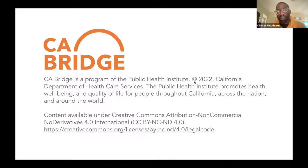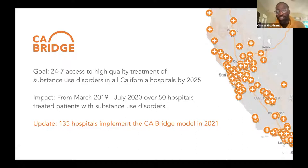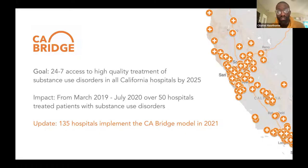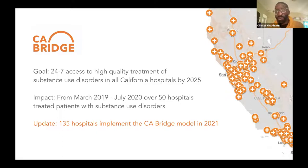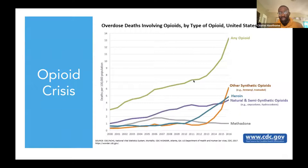Just a little background on California Bridge: we're a program of the Public Health Institute, and we work to make sure there's access to high-quality treatment in hospitals across the state by 2025, essentially trying to ensure access to treatment 24/7. We currently have a funding opportunity called our Bridge Navigator Program, which is funding hospitals to get substance use navigators. We're working on placing navigators at a few children's hospitals across the state. If you're interested or have a connection to a hospital without a Bridge Program, please reach out.